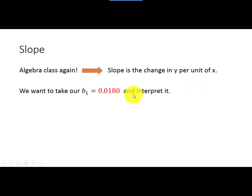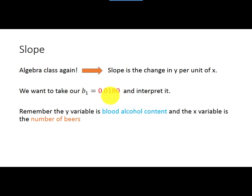So let's recall from the most recent example that our slope was 0.0180. If you look in our model, that was the number next to our explanatory variable, BEERS. So this is our slope. I want to take this and interpret it. So let's recall, the y variable, or our response variable, was blood alcohol content, and our x variable was the number of beers.